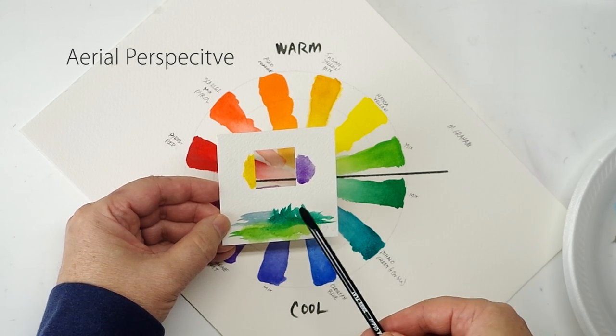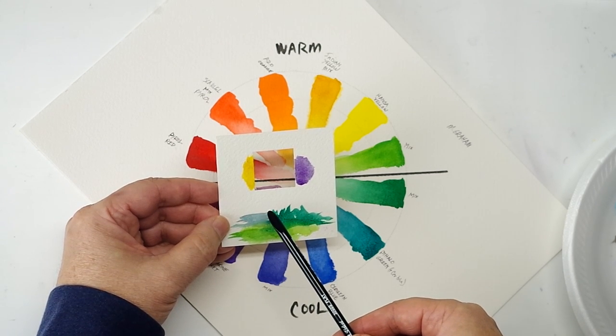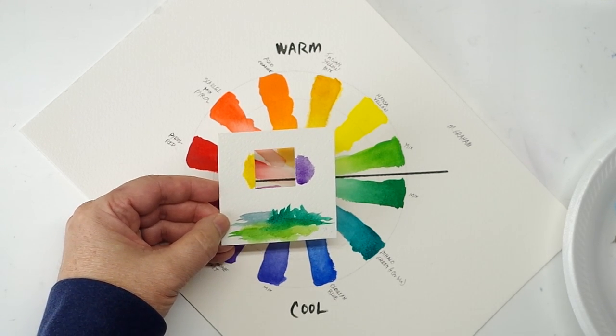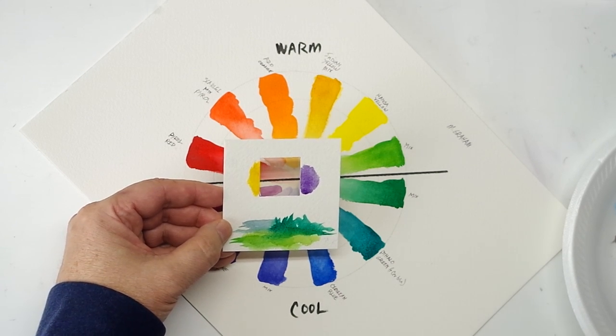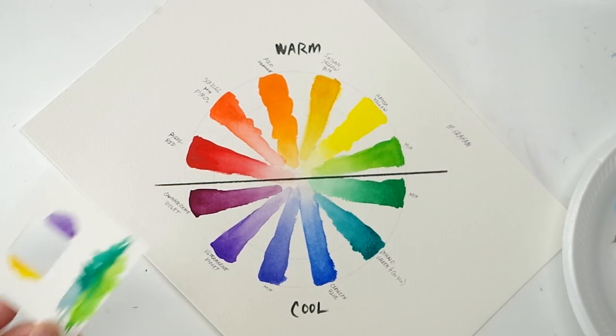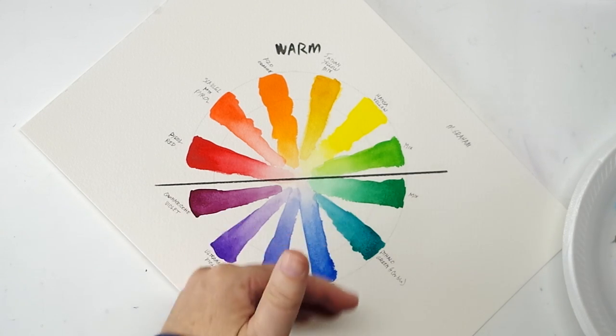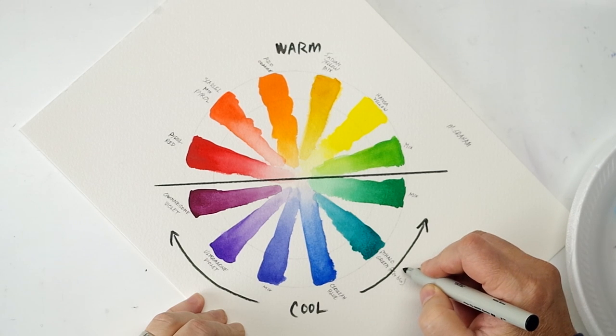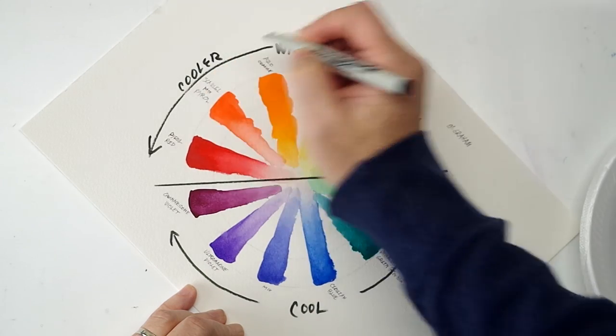If you're doing a landscape, for instance, the closer the colors are to you in a landscape, usually the warmer and more intense they are. As they go further off into the distance, they get cooler and less intense, until your most distant hills are usually almost always blue. If you ever look at landscapes or hills or mountains in the distance, they're almost always bluish shades, and the colors are usually less intense. They also decrease in contrast. So that's just another thing you can think of when you look at warm and cool colors. As you go this way on the color wheel you get warmer. You go this way on the color wheel you get cooler.